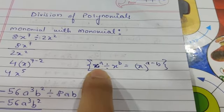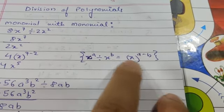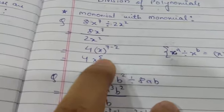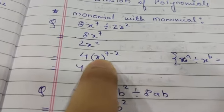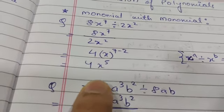So we can use law of indices exponent law. x to the power a divided by x to the power b can be written as x to the power a minus b. So we are writing here x to the power 7 minus 2, that is x to the power 5. So the final answer is 4x to the power 5.